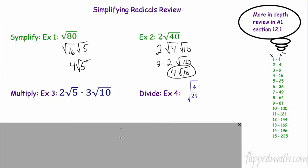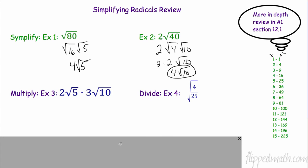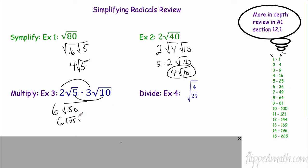When multiplying radicals, multiply what's outside with outside — 2 times 3 is 6 — and inside with inside — 5 times 10 is 50. Then simplify: 50 factors as 25 times 2, so the square root of 25 is 5, giving 6 times 5 radical 2, which is 30 radical 2.